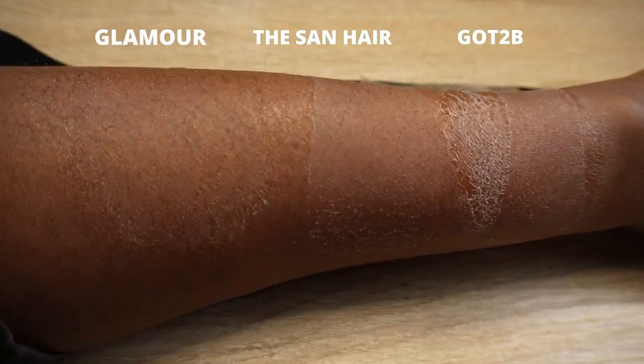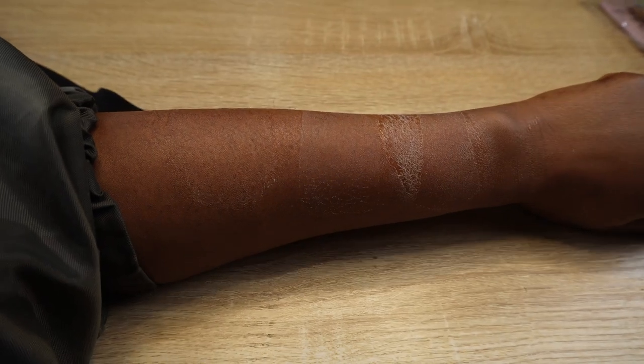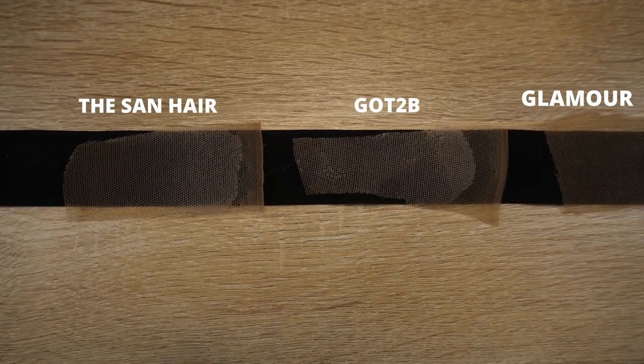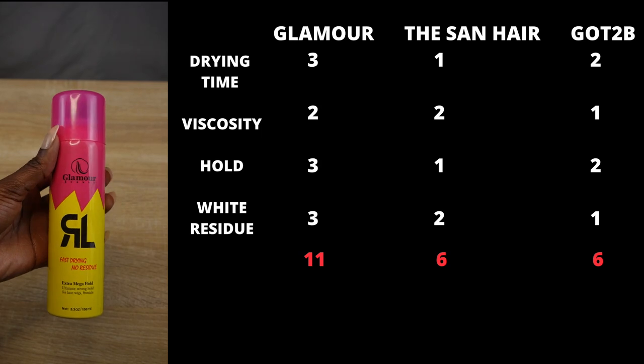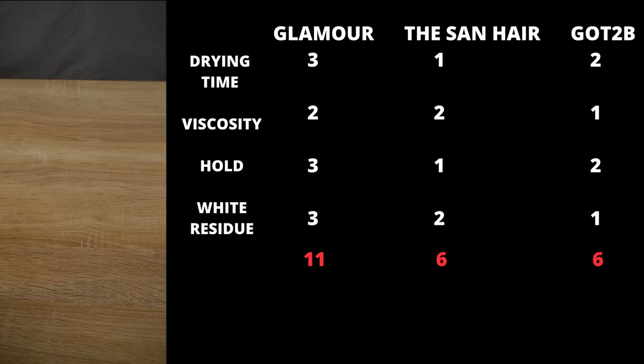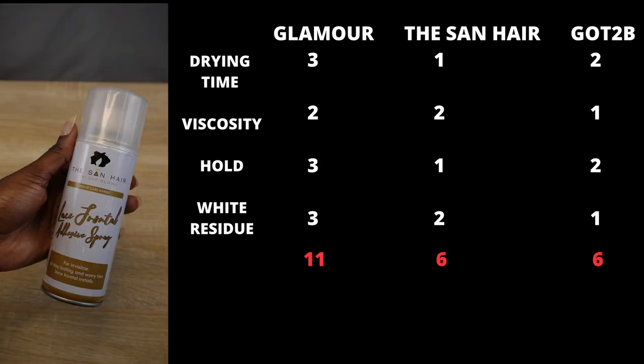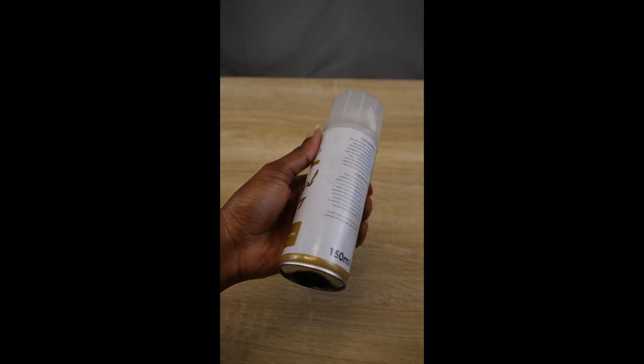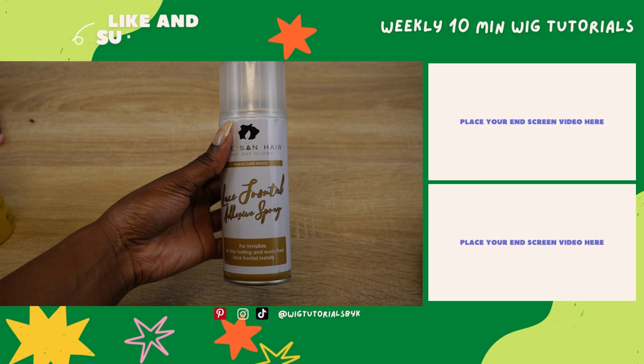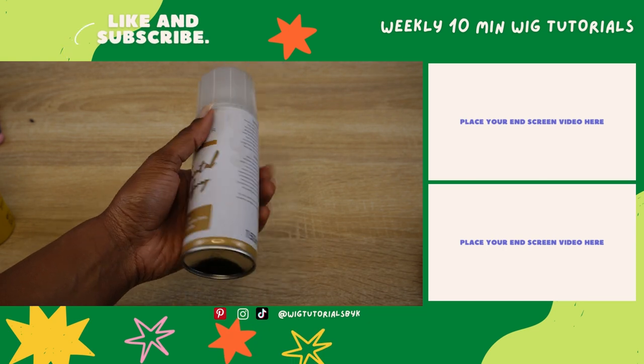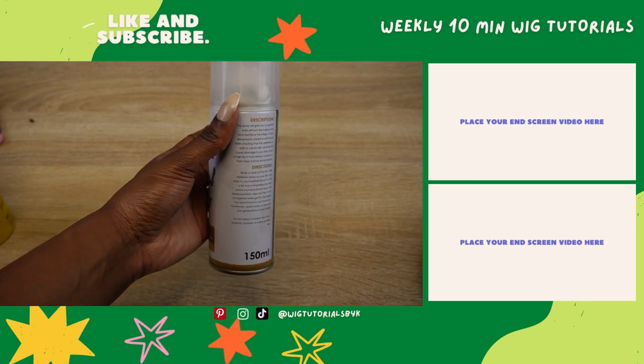This is how the white residue looks. When we tally up the results, 11 points goes to Glamour Hair. The Senhei spray and Got to Be are tied at six points. The Senhei lace adhesive spray is a strong contender, and that is why you need to watch this video to see the flawless results you can achieve using it. Thanks for watching and I'll see you in my next one. Bye!